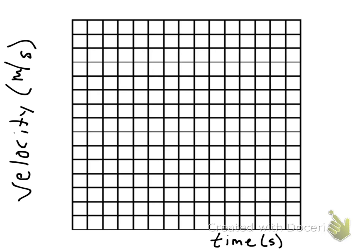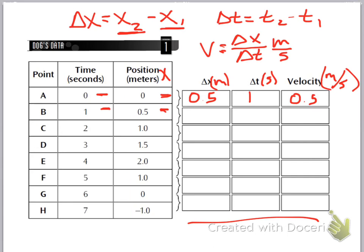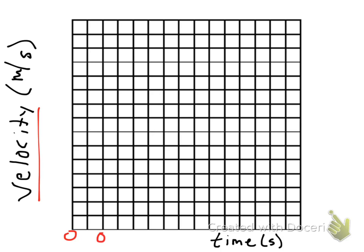Once you're through with that, you're going to plot the second graph, which is velocity versus time. You're going to plot what you get in the last column for velocity. Now, velocity is a little tricky to plot because it's in between two times — for example, between 0 and 1. So you would plot it in between 0 and 1; that's where you'd put your dot on the graph, right in the middle.